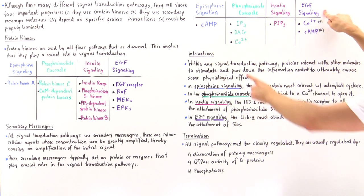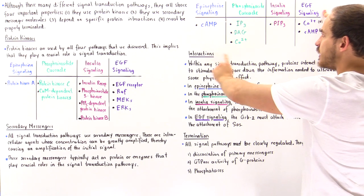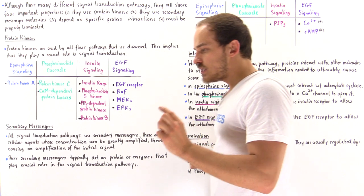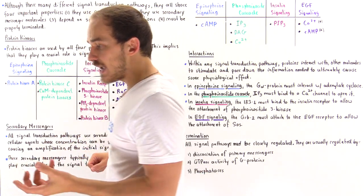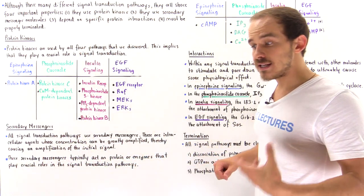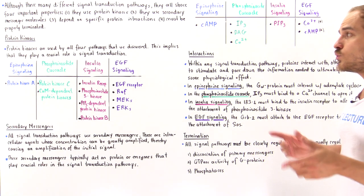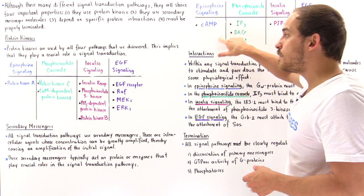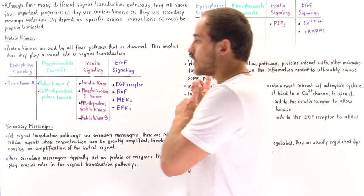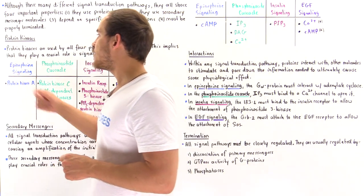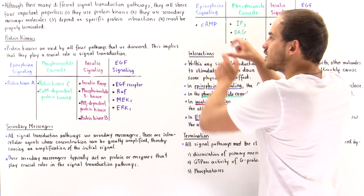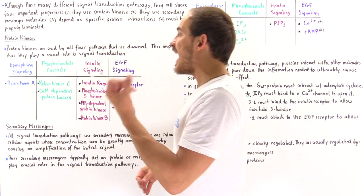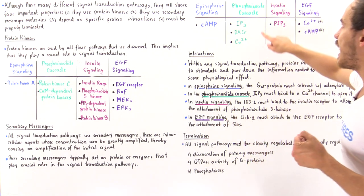In epinephrine signaling, once the G-alpha protein binds onto adenylyl cyclase, it stimulates adenylyl cyclase to transform ATP into cyclic AMP. Cyclic AMP is the secondary messenger used by epinephrine signaling — it binds onto protein kinase A and activates it.